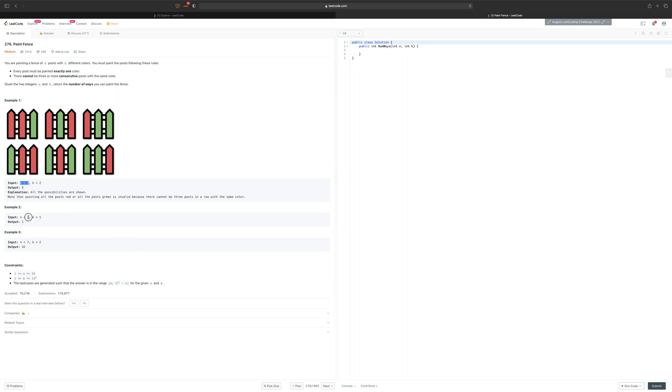If we have one post and only one color, the only possible combination is one because there is no alternative other than having that same color, that one color.